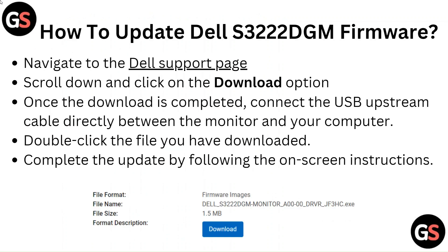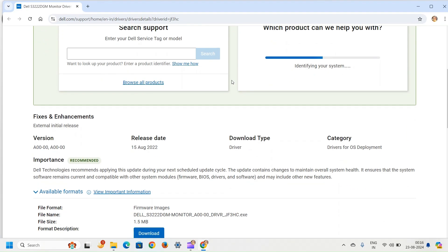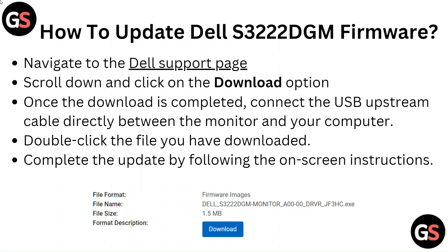How to update Dell S3222 DGM firmware: Navigate to the Dell support page and scroll down, then click on the download option. Once the download is completed, connect the USB upstream cable directly between the monitor and your computer. Double click the file you have downloaded and complete the update by following the on-screen instructions.